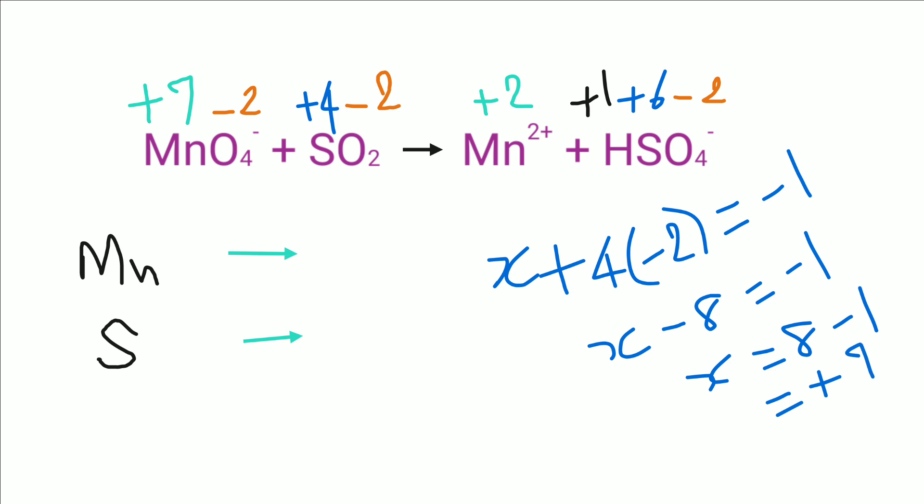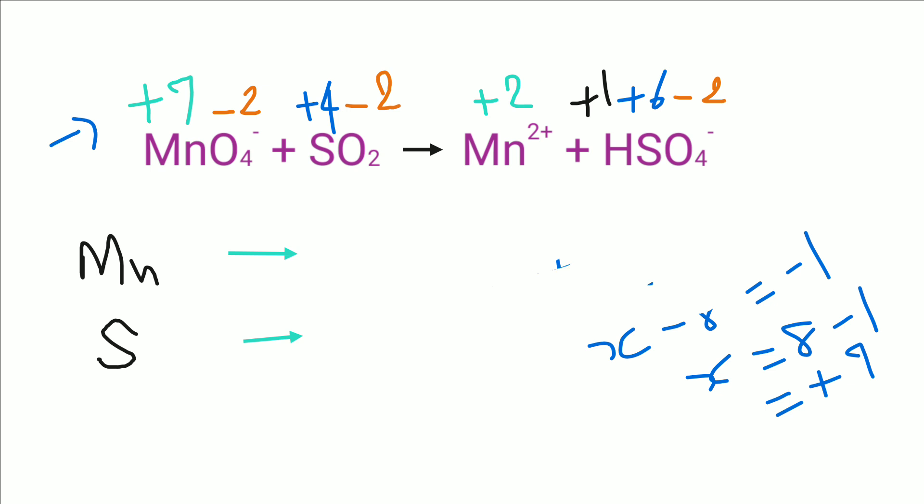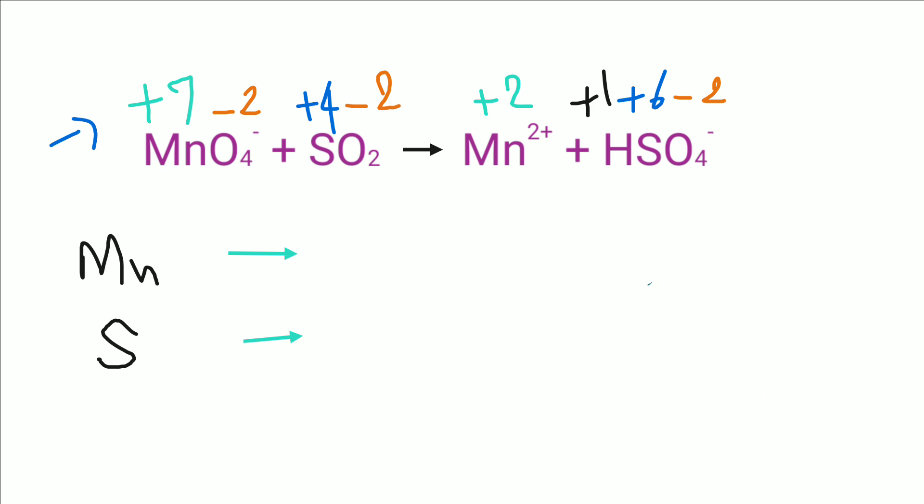That was written here — I have already written plus 7. In the same manner, we can calculate the oxidation number of sulfur in sulfur dioxide and sulfur in bisulfate ion or hydrogen sulfate ion. I have already worked those out and the oxidation numbers are mentioned against each atom.